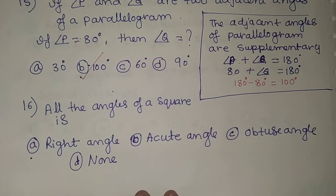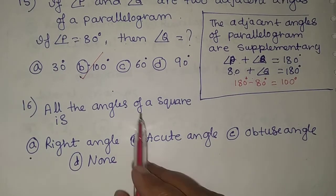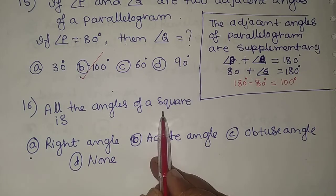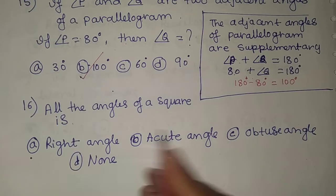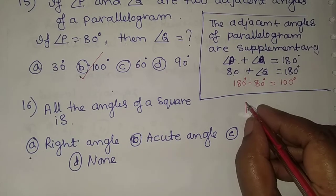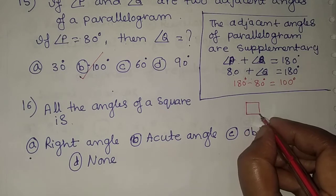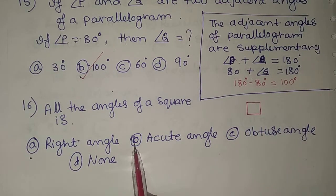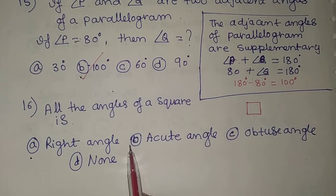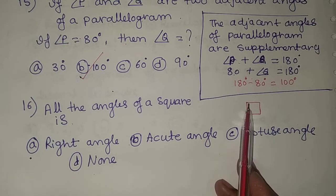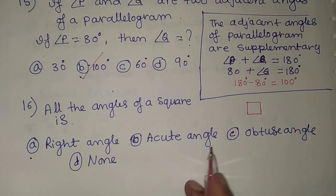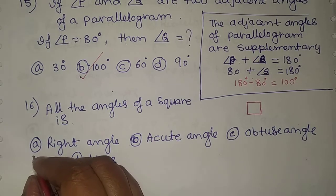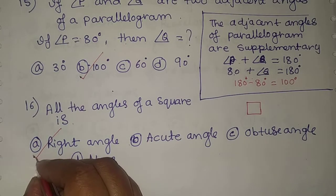The 16th problem: all the angles of a square are how much? The four options are right angle, acute angle, obtuse angle, and none. All the angles in a square are right angles. So option A is the correct answer.